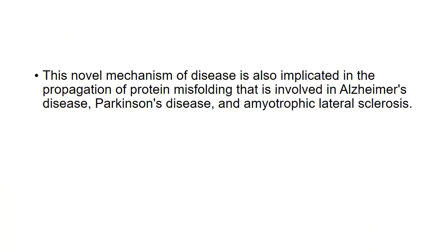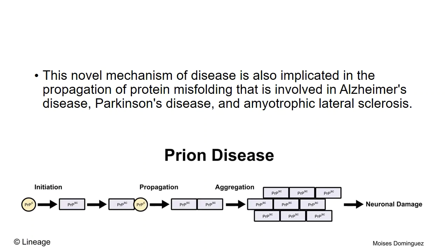This novel self-propagation mechanism is also implicated in diseases like Alzheimer's disease, Parkinson's disease, and amyotrophic lateral sclerosis, which will be discussed in the next class. Prion diseases always show characteristic initiation, propagation, and aggregation, followed by neuronal damage.